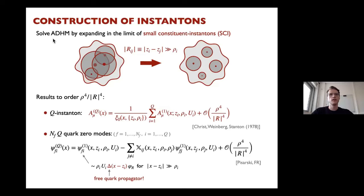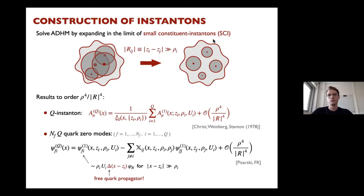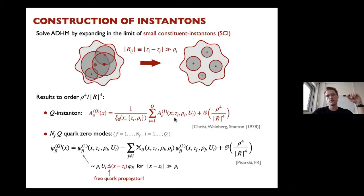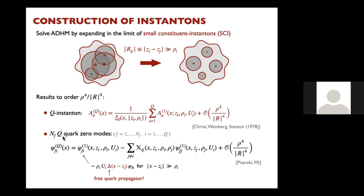I solve the ADHM equations by expanding in the limit of small constituent instantons, assuming the relative distance between all constituents is much larger than their respective sizes. The instanton solution, worked out by Callan, Dashen, and Gross and by Jackiw and Rebbi in 1978, is essentially a sum over the constituent instantons — each with charge one and individual coordinates — plus a factor tying them together so they still interact.